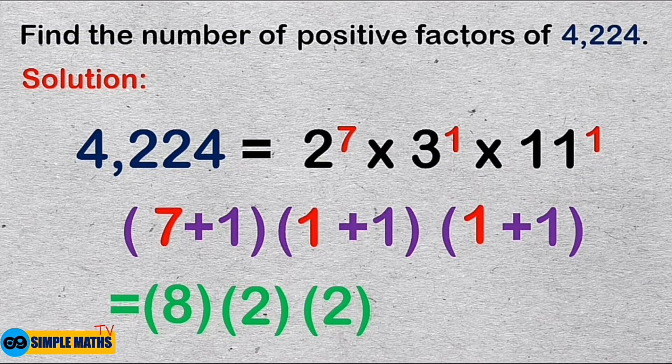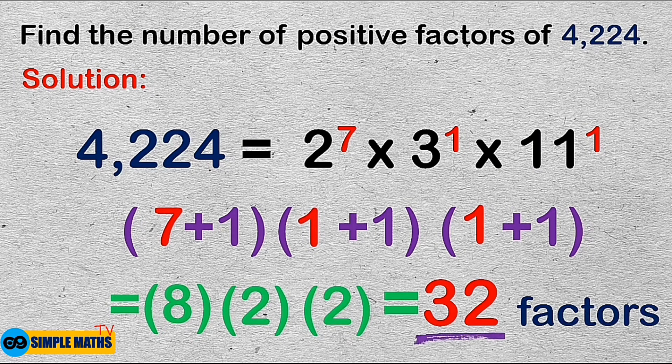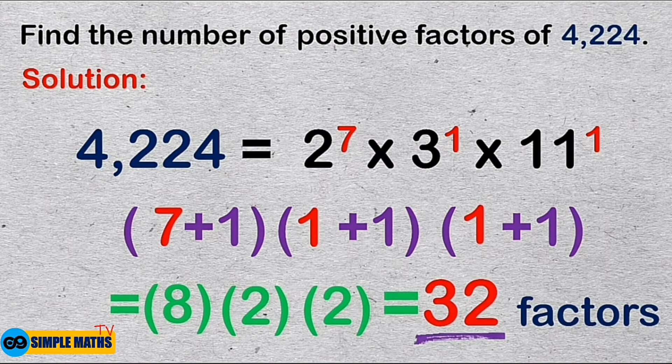Lastly, we get the product. 8 times 2 times 2 equals 32. Therefore, there are 32 positive factors of 4,224.